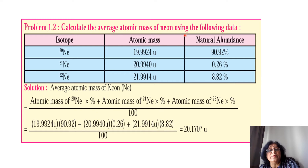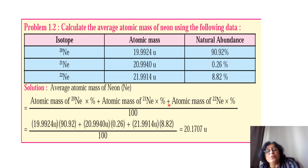Calculate the average atomic mass of neon using the following data. Neon-20, neon-21, and neon-22 are the three isotopes, with their masses and abundances given. The formula is: (atomic mass of Ne-20 × percentage + atomic mass of Ne-21 × percentage + atomic mass of Ne-22 × percentage) divided by 100. This gives a value of 20.1707 U.